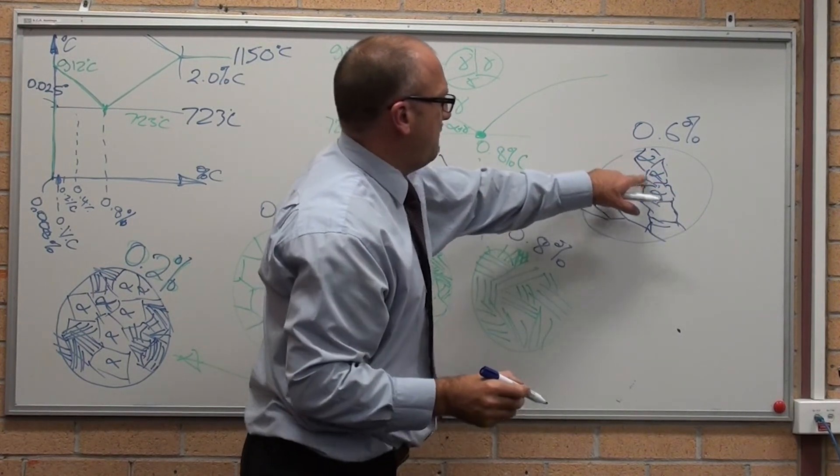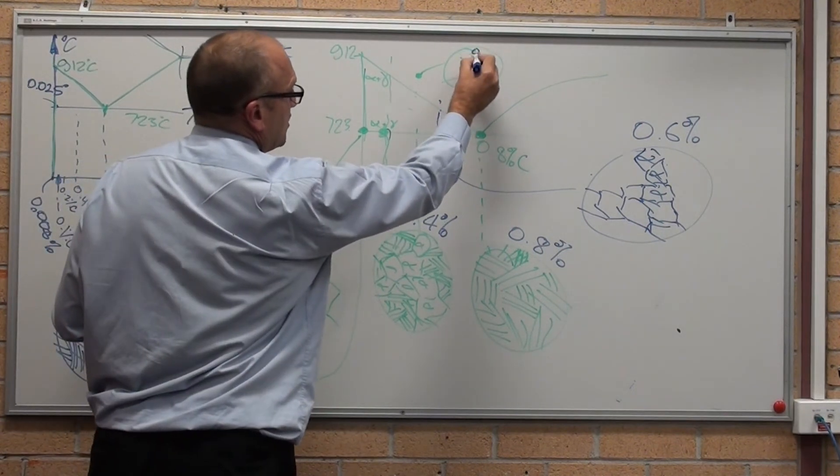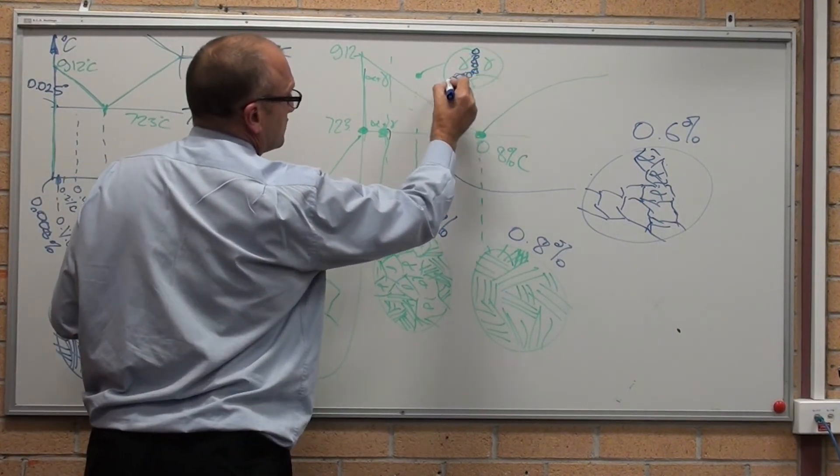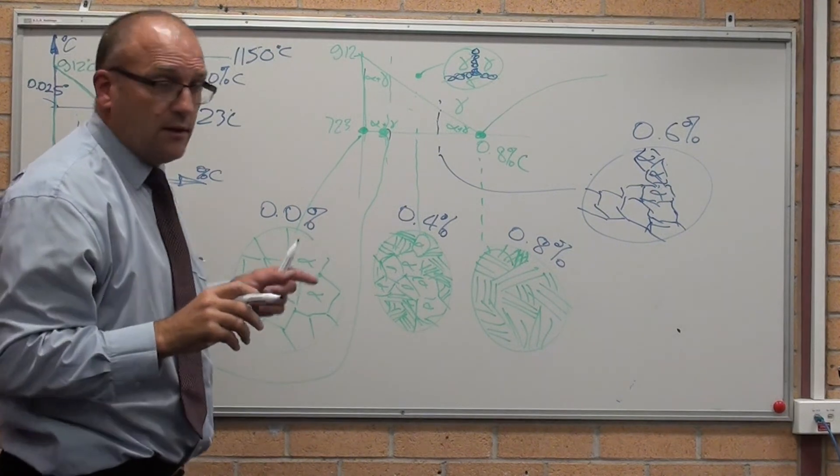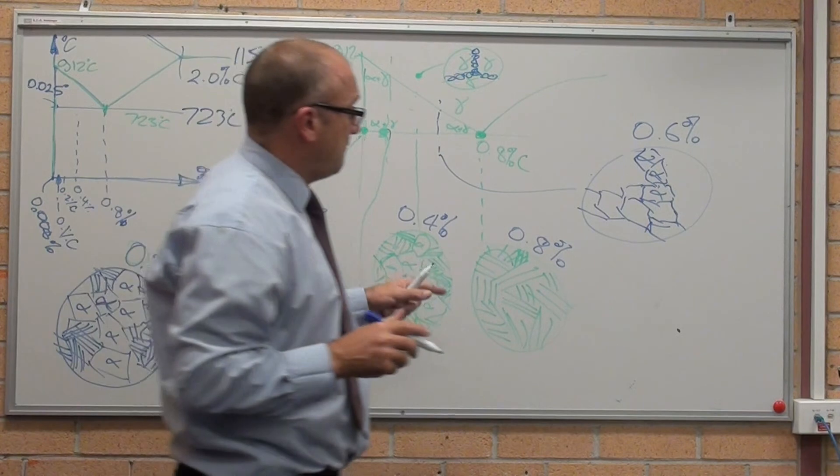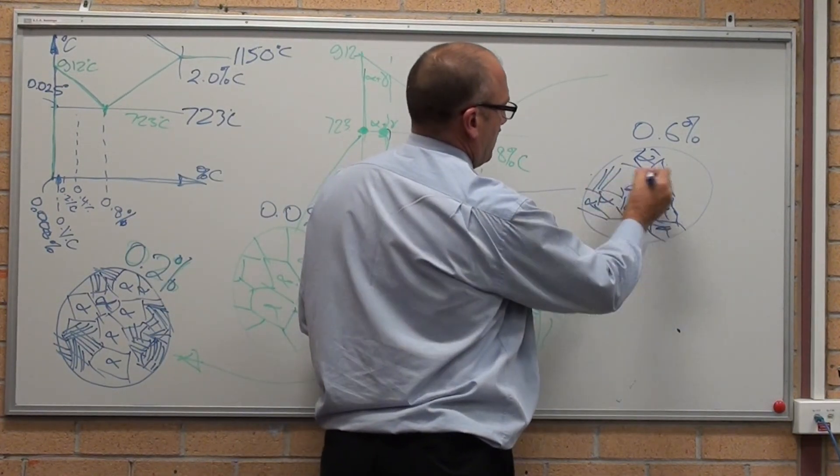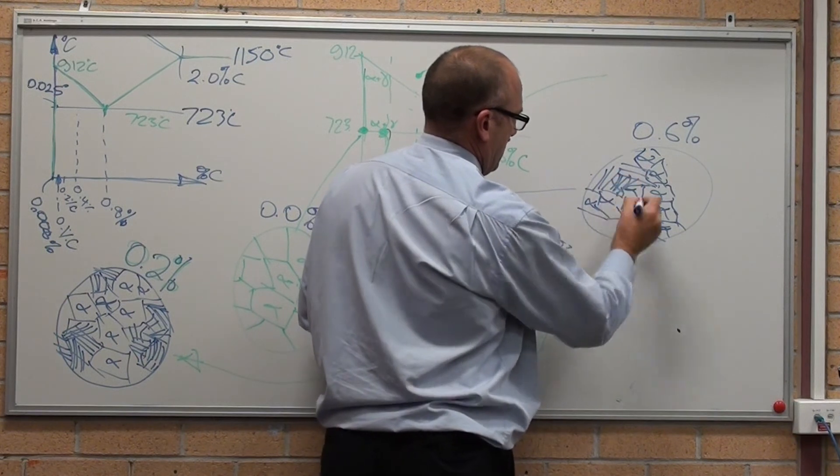Where this ferrite has formed on the grain boundaries, just a little bit like that. There's not a lot of, or there's lots of extra carbon, so you don't form much ferrite. Then when it gets to 723, the rest of it is pearlite. And lots of it.